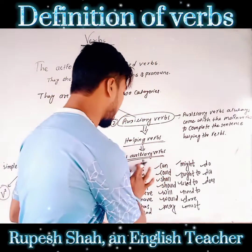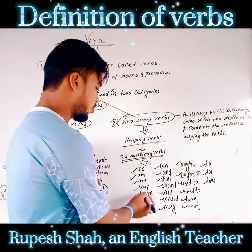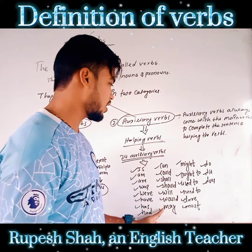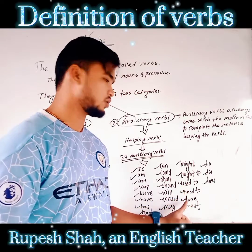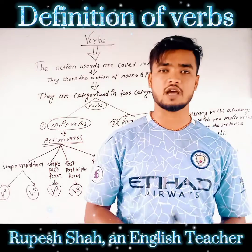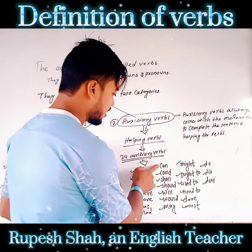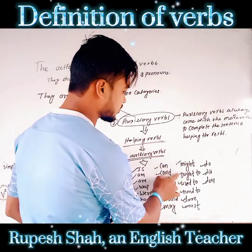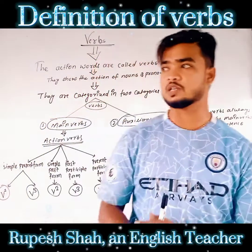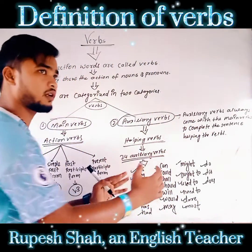The 24 auxiliary verbs are: is, are, was, will, have, has, had, can, could, shall, should, will, would, may, might, ought to, used to, need to, dare, and must. Do, does, and did are also auxiliary verbs — making 24 in total. You can count here: 1, 2, 3, 4, 5, 6, 7, 8, 9, 10, 11, 12, 13, 14, 15, 16, 17, 18, 19, 20, 21, 22, 23, and 24.